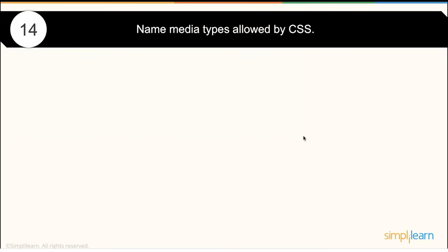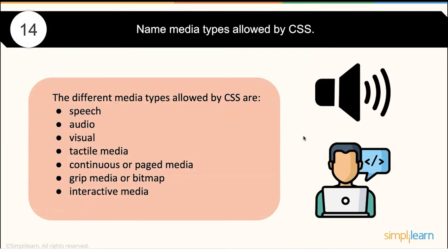Name the media types allowed by CSS. Media types are basically a part of responsiveness. Different media types allowed include speech, audio, visual, tactile media, continuous or paged media, grid media, bitmap, and interactive media — these are all types of media allowed in CSS.